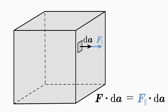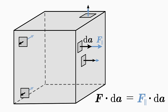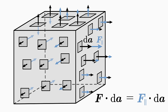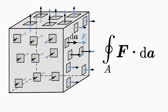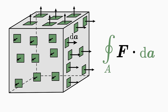Subsequently, the scalar products for all locations of the considered surface A are added up — that is the task of the integral. The right-hand side of the divergence integral theorem thus sums up all the components of the vector field F that flow into or flow out of the surface A. Such an integral, in which small pieces of a surface are summed up, is called a surface integral.